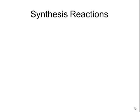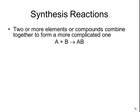Chemical reactions generally fall into one of five different types of reactions. The first type of reaction is called a synthesis reaction. A synthesis reaction is when two or more elements or compounds combine together to form a more complicated one. The general form of the reaction is A plus B yields AB.